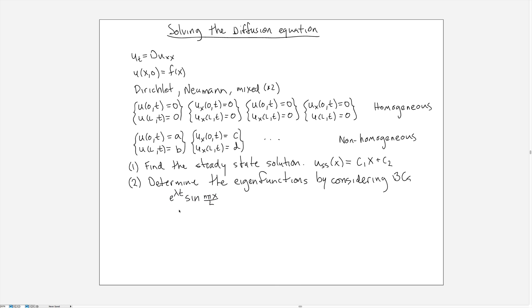the eigenfunctions are e to the lambda t sine of n pi X over L where lambda is a slightly complicated expression but it's basically minus n squared pi squared over L squared multiplied by d.